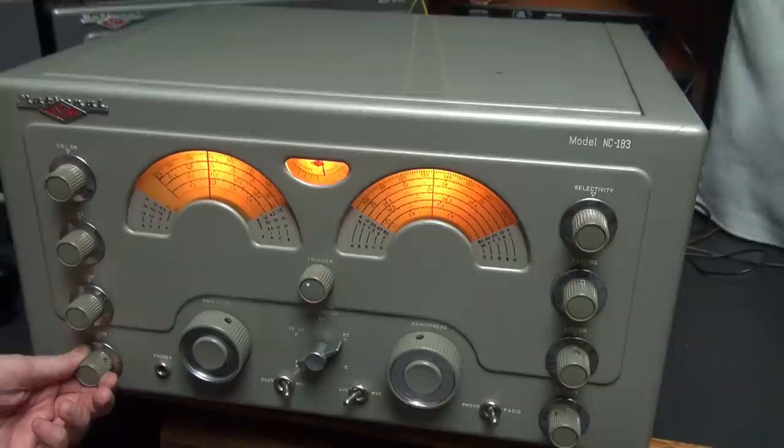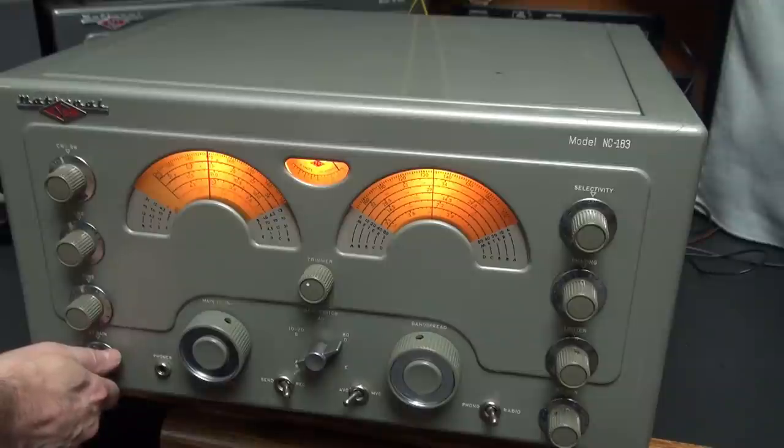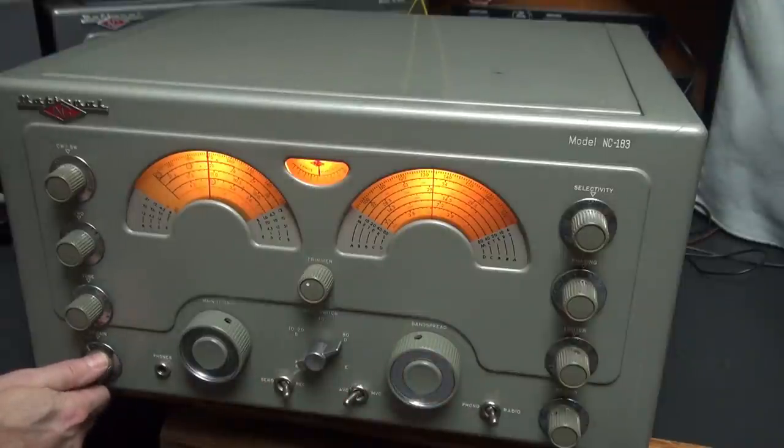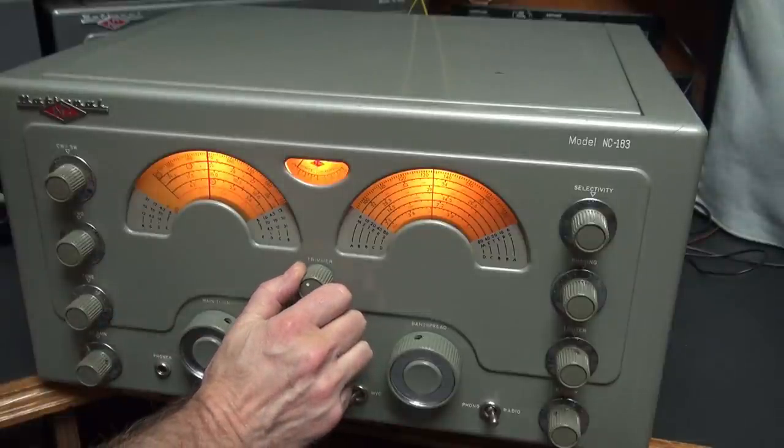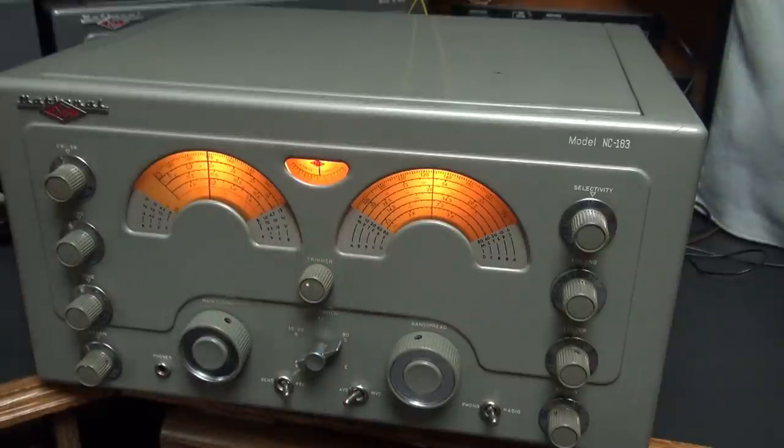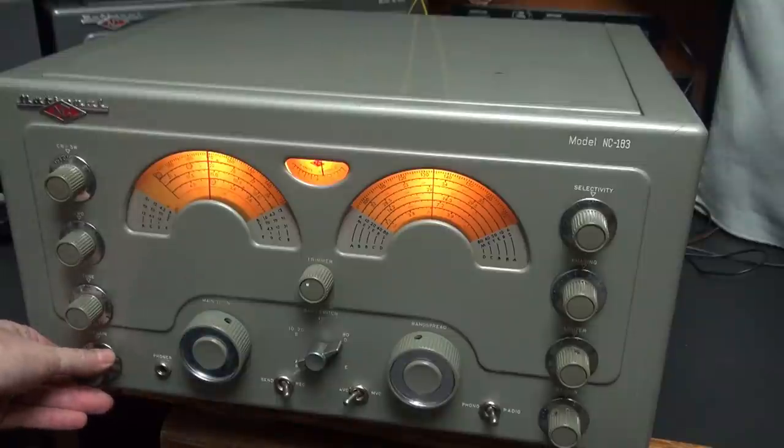Listen to that 6V6 push-pull audio. If you want to see the calibrator module, pop the lid here. It's back there on the right-hand corner - it's the D-Lab XCU-1M made specifically for the 183 receiver.